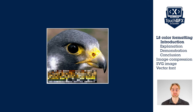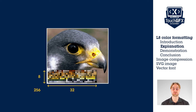The first flash-saving concept is L8 color formatting. We will see how it works and then use it inside Designer. L8 color formatting uses a lookup table of 256 colors. Each pixel refers to a value in that color lookup table, stored in 8 bits, instead of storing a color code encoded in 32 bits. This can lead to a flash saving of over 70% for each image.